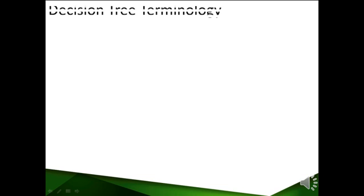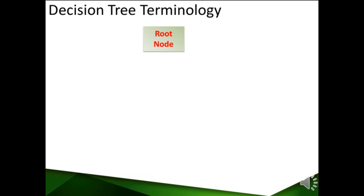Let us understand the common terminology used in decision tree modeling. The starting point of a tree is the root node. The root node, also called the base node, includes the entire model population.